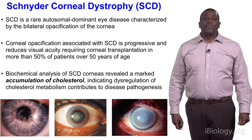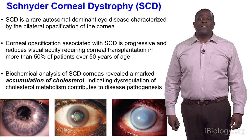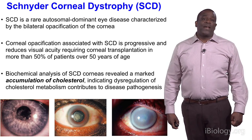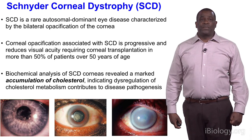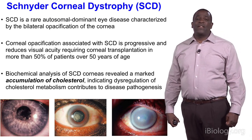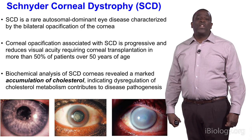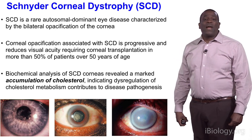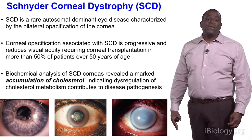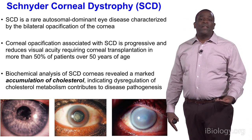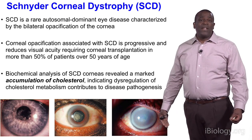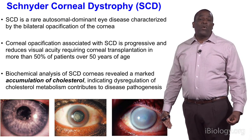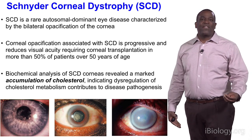So what is Schneider Corneal Dystrophy? SCD is a rare autosomal dominant eye disease characterized by the bilateral opacification of the cornea. This corneal opacification is progressive, can be detected in patients as young as 10 years of age, and reduces visual acuity, typically requiring corneal transplantation in more than 50% of patients over 50 years of age. Biochemical analysis of SCD revealed that cholesterol markedly accumulates in the corneas of SCD patients, indicating that dysregulation of cholesterol metabolism contributes to the pathology of this disease.